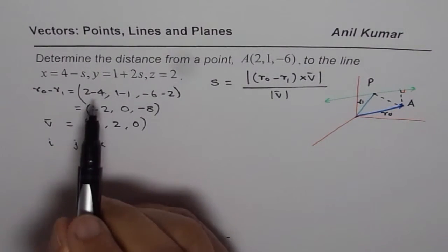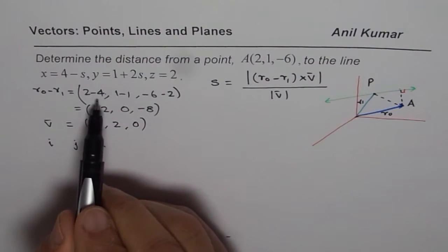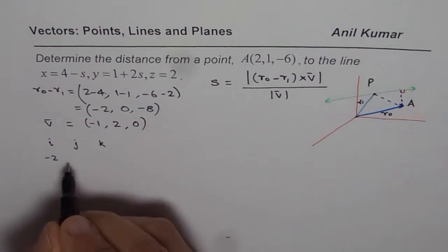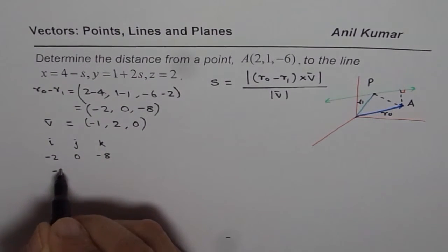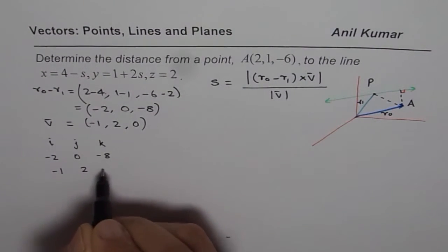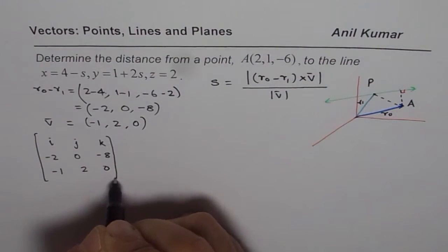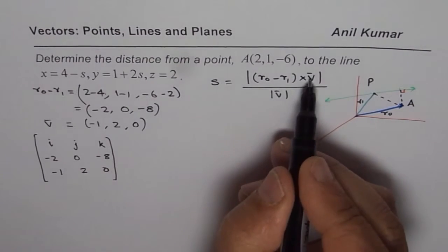i, j, k, and this value is minus 2, 0, minus 8. And we have minus 1, 2, 0. So let us find this cross product. So this is the cross product, the numerator we are trying to find. We will find the magnitude after this.